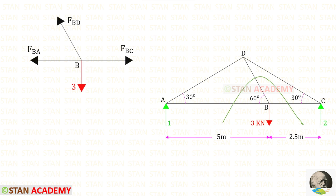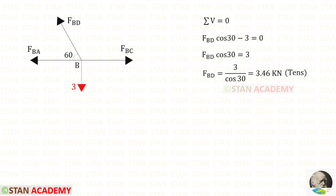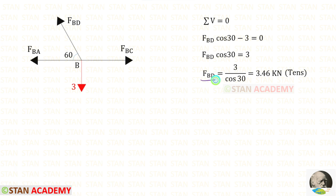Now I am going to make the last and third section like this and I am going to take this part and do the analysis. We have already calculated FBA and FBC, so only we have to find FBD. Let us apply the rule sigma V is equal to 0. 3 is acting downwards so it will be negative. FBD is inclined — we have to make it vertical, and to do that we need 30 degrees. Since it is acting upwards it will be positive and we have to multiply with cos 30. For FBD we will get a positive value, which means it is tensile.